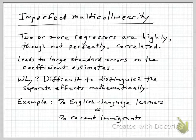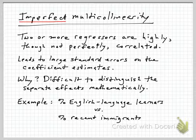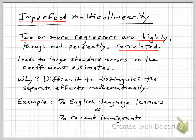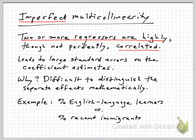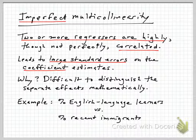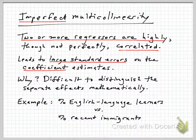Turning to imperfect multicollinearity: this is a case where the variables are not perfect linear combinations of each other, but two or more regressors are highly, though not perfectly, correlated. The main consequence of imperfect multicollinearity is it tends to blow up the standard error estimates on your coefficients. As a consequence, you get very large confidence intervals and it becomes hard to reject the null hypothesis that any given estimate is zero.